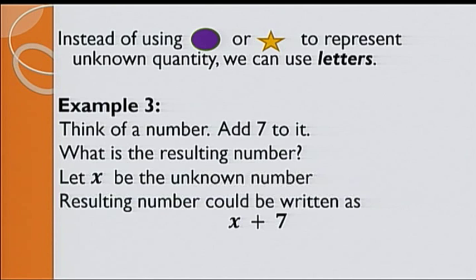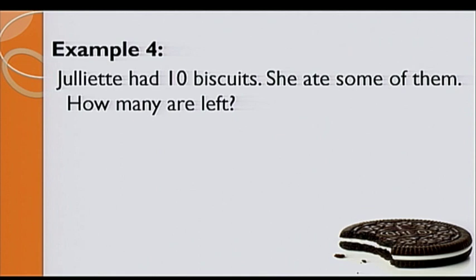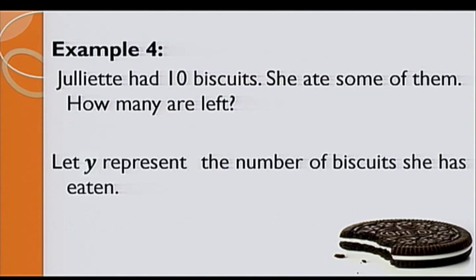Example 4. Juliet had 10 biscuits. She ate some of them. How many are left? Let y represent the number of biscuits she has eaten. Therefore, the number of biscuits left is equal to 10 minus y.